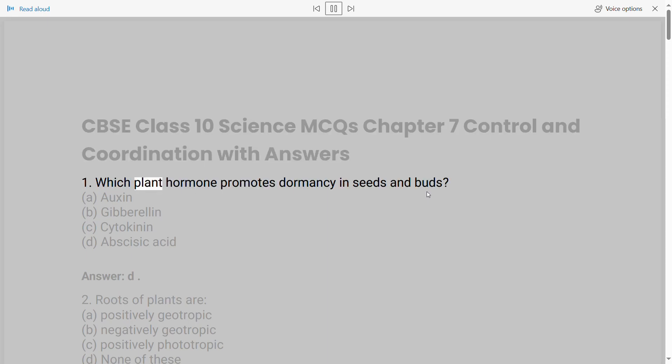1. Which plant hormone promotes dormancy in seeds and buds? A. Auxin B. Gibberellin C. Cytokinin D. Abscisic Acid. Answer: D.